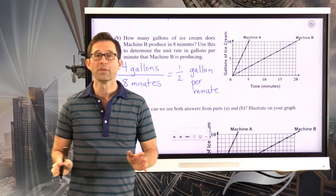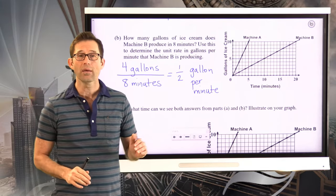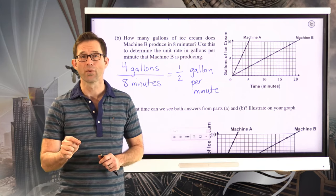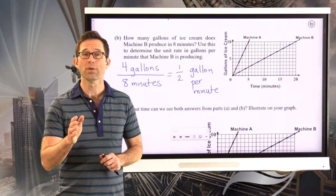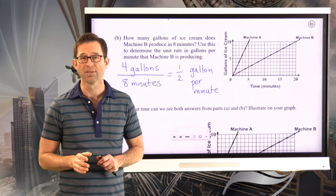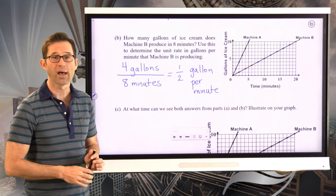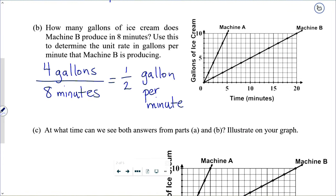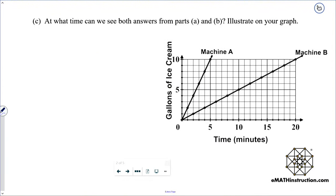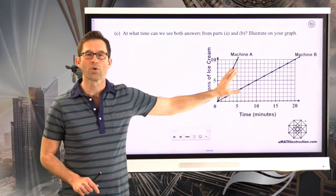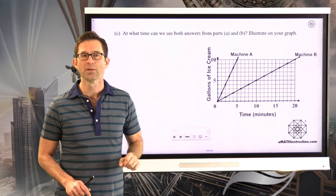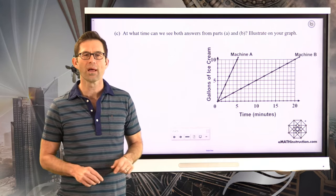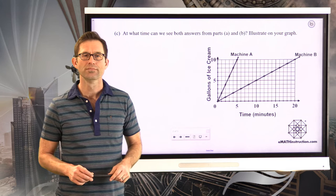Now, we've got these two unit rates. In letter A, machine A was producing two gallons of ice cream per minute, and letter B, machine B was producing a half a gallon of ice cream per minute. Letter C asks us the following: At what time can we see both answers from parts A and B illustrated on your graph? So where can we go on this graph to actually see the unit rates? Do you remember where that was from the last lesson?